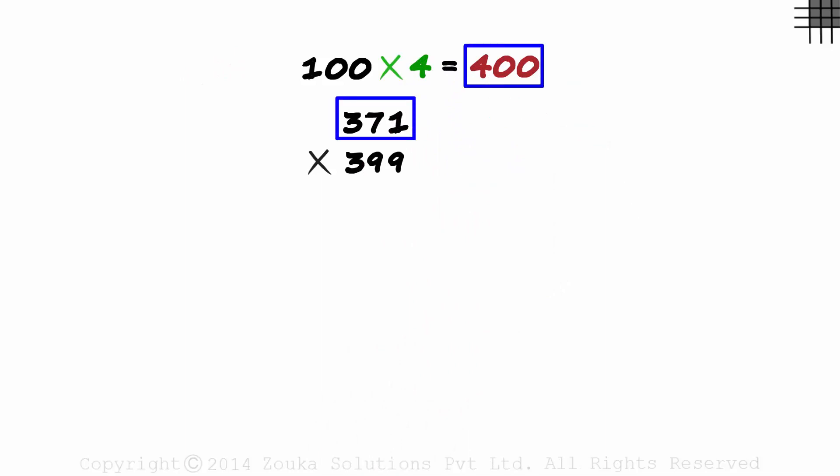371 minus 400 is equal to minus 29, and 399 minus 400 is equal to minus 1. Base done, deviations done.